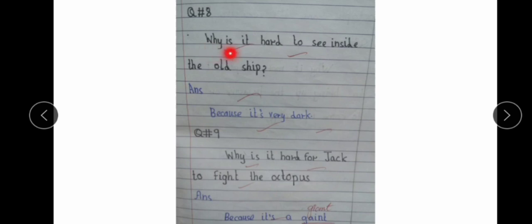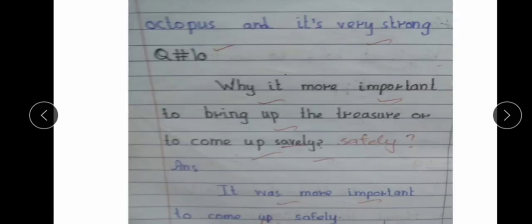Question number 8, why is it hard to see inside the old ship? And question mark must be put. Because it's very dark. It was very dark inside the ship so it was difficult for him. Question number 9, why is it hard for Jack to fight the octopus? Because it's a giant, it was a very big octopus, and it's very strong. It was very powerful so it was very difficult for him to fight it.